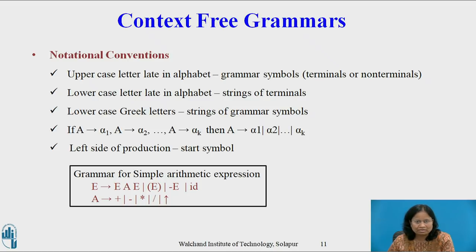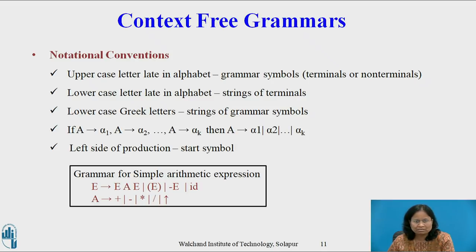If A derives alpha1, A derives alpha2, and so on up to A derives alpha k are productions with A on the left, then we may write A derives alpha1 | alpha2 | ... | alpha k. Unless otherwise stated, the left side of the first production is the start symbol. The grammar for a simple arithmetic expression using these notational conventions is given below.